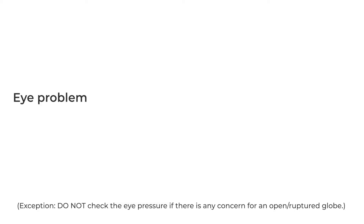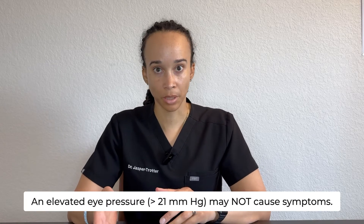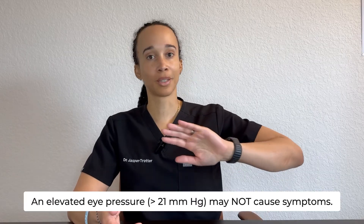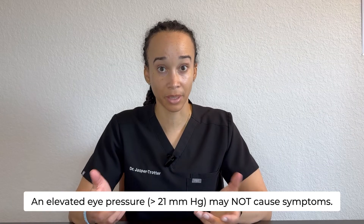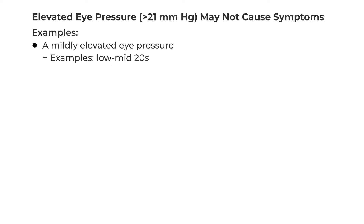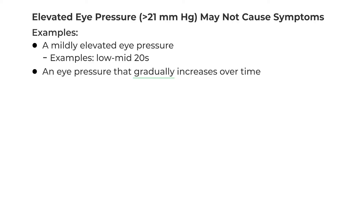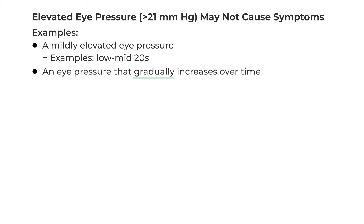So: eye problem, nausea, vomiting — check the eye pressure. But an elevated eye pressure may not cause symptoms. I've been in clinic seeing a patient for something completely different, talking about the weather, and it turns out the pressure is 27 and they had no idea. This may occur if the pressure is mildly elevated, like in the low to mid 20s, or if the eye pressure gradually increased over time, like in chronic glaucoma — just little by little, slowly increasing — which may not cause problems until it gets to a really high eye pressure.